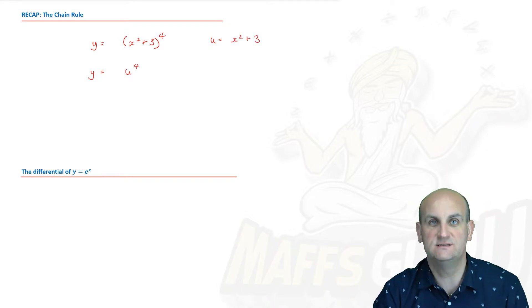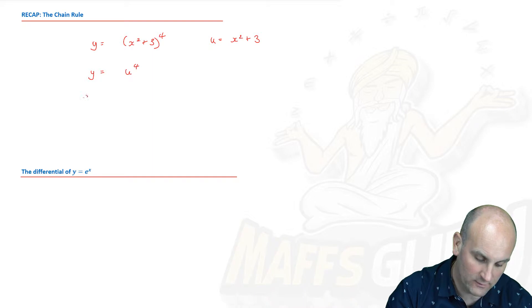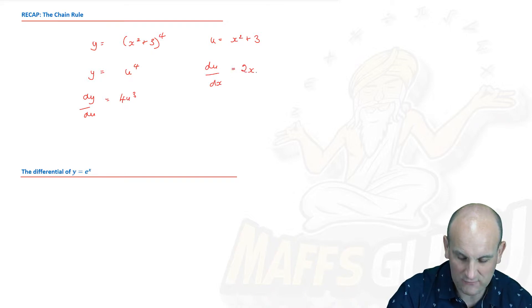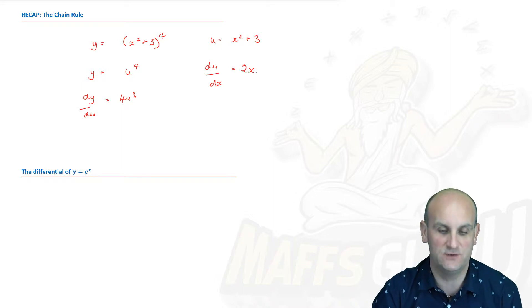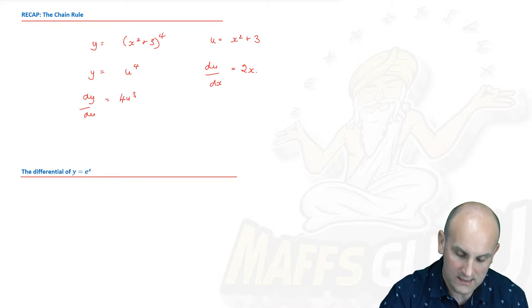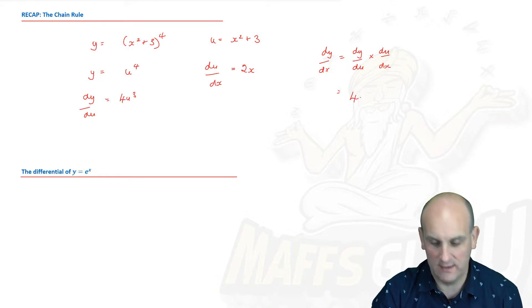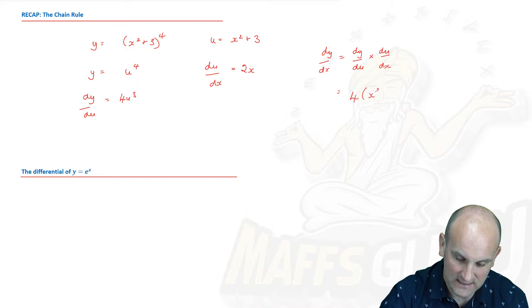Now the chain rule tells us that what we can do is differentiate each of those individual parts and then multiply them together. So I now know that we have dy/du would give me 4u³. And I would know that du/dx in that situation would give me 2x. So I've differentiated those two individual parts. And what do I do now? Well I know that dy/dx is equal to dy/du multiplied by du/dx. That's the chain rule.